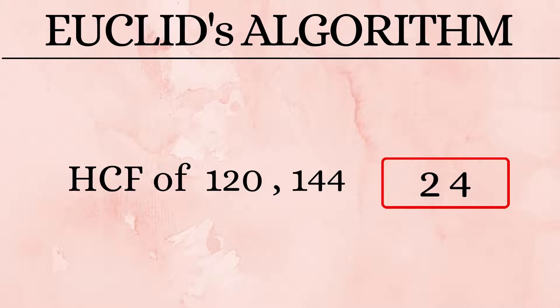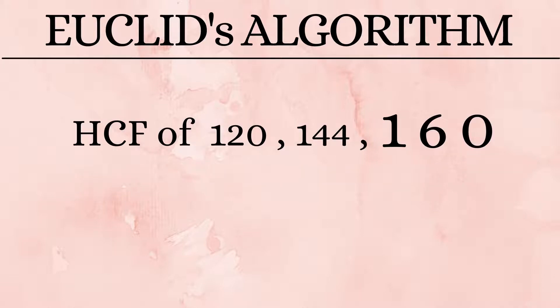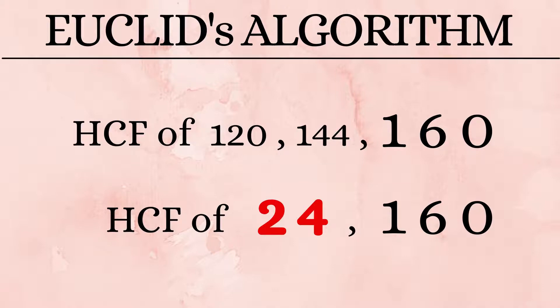But we are not done yet. There is another third number, 160. To find the HCF of 3 numbers using Euclid's algorithm, we find out the HCF of the first 2 numbers and then replace it. So in our next step, we find the HCF of 24 and 160. The answer which we get will be the HCF of all 3 numbers: 120, 144, and 160.